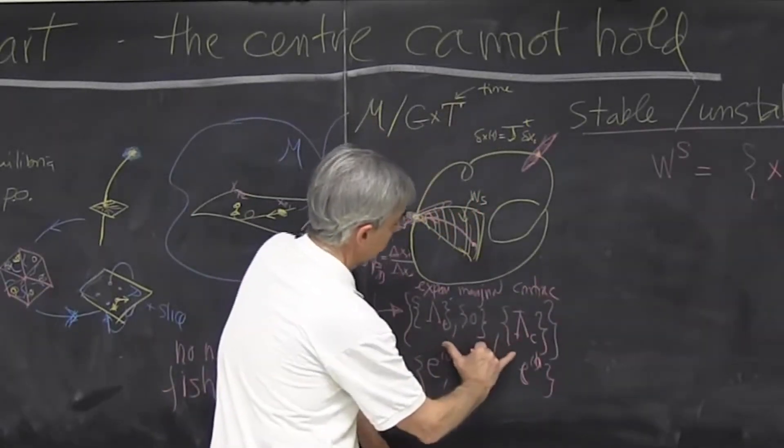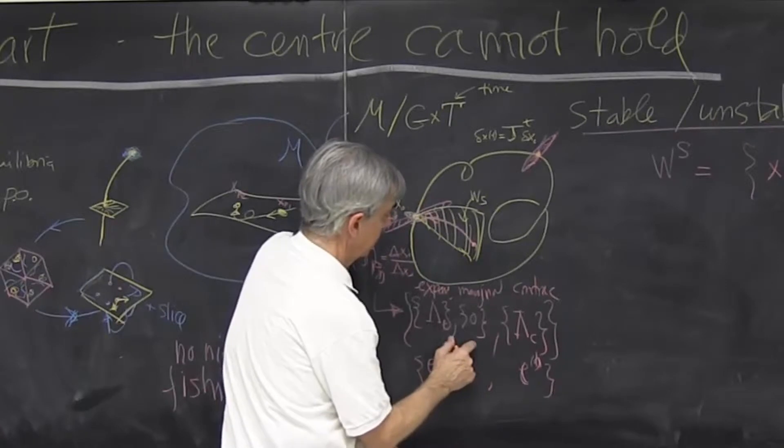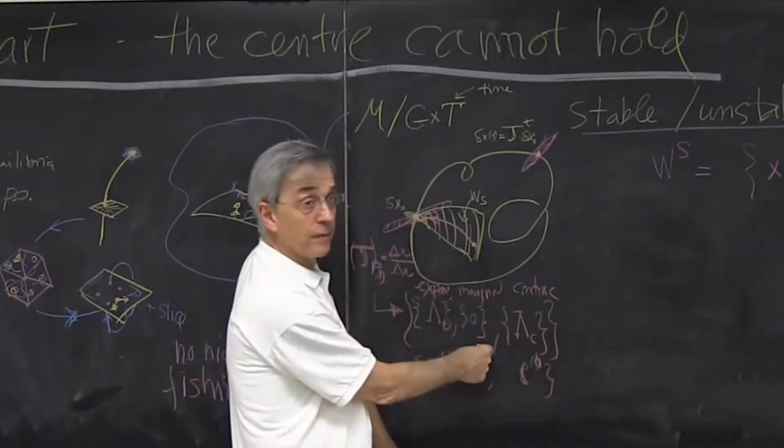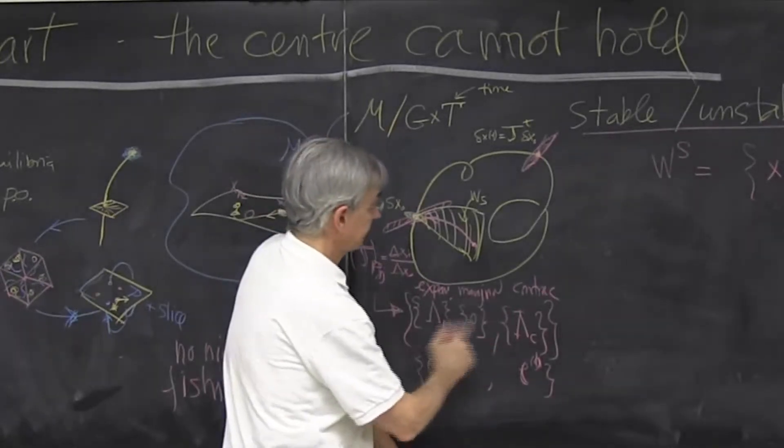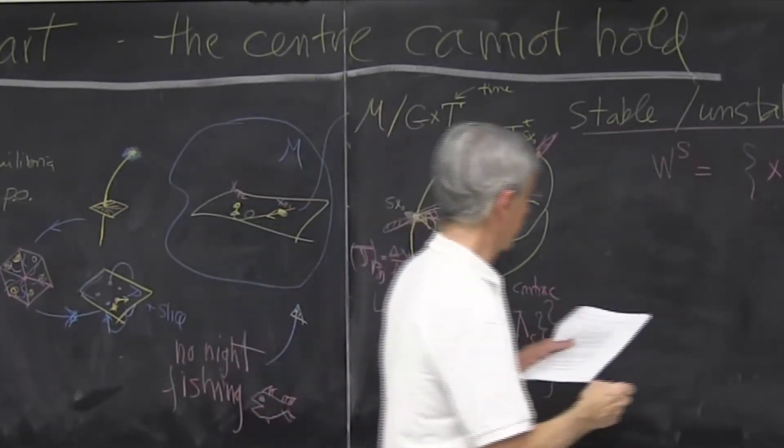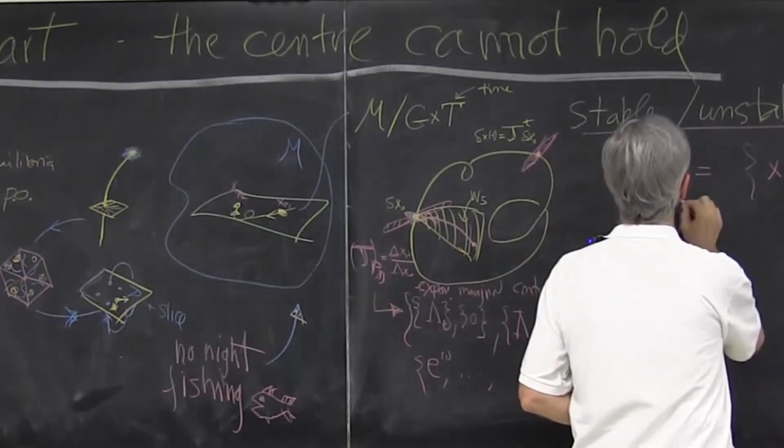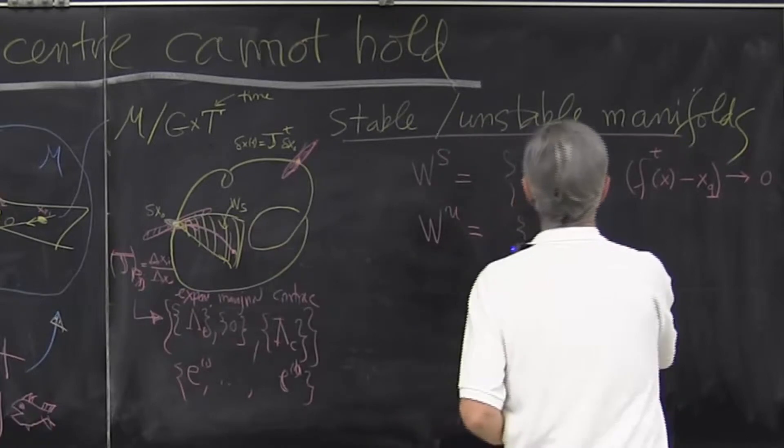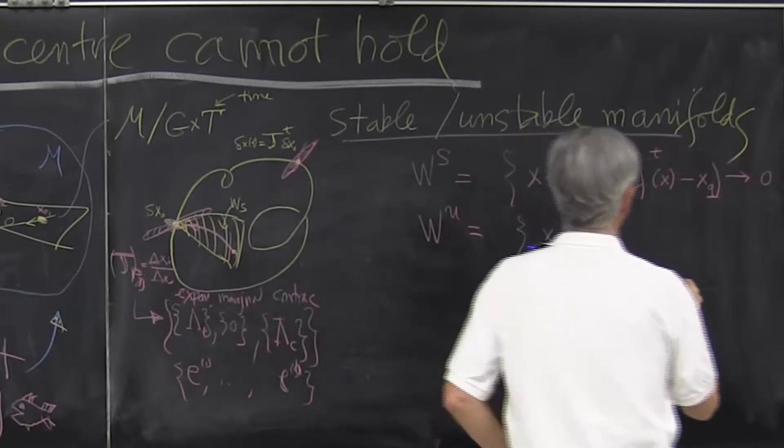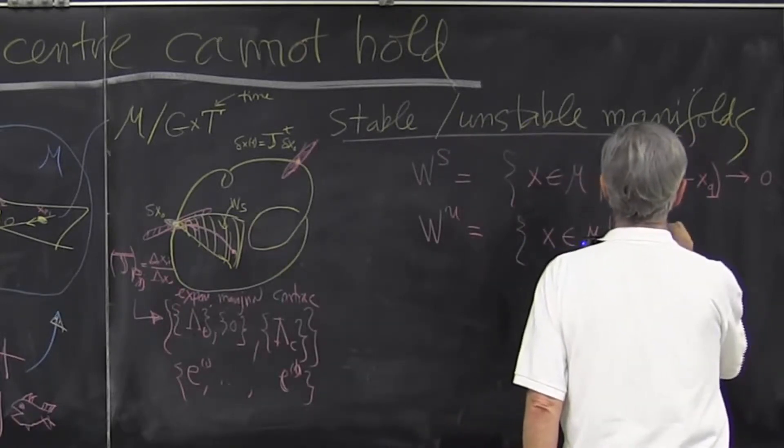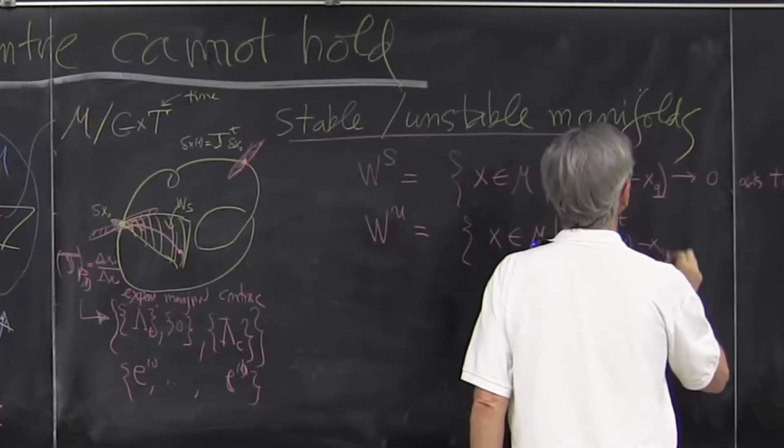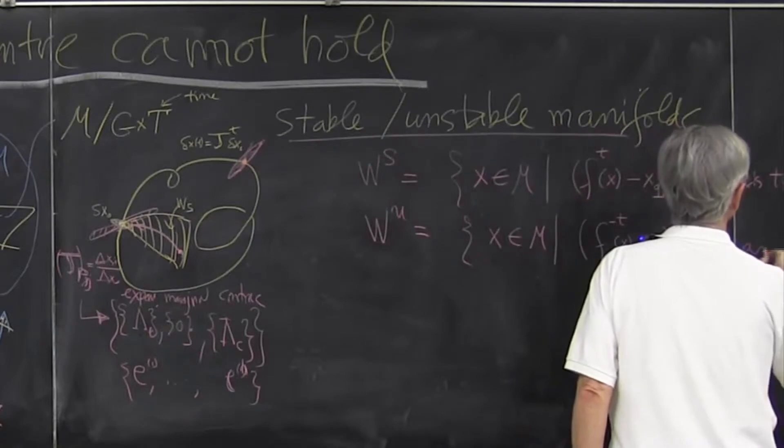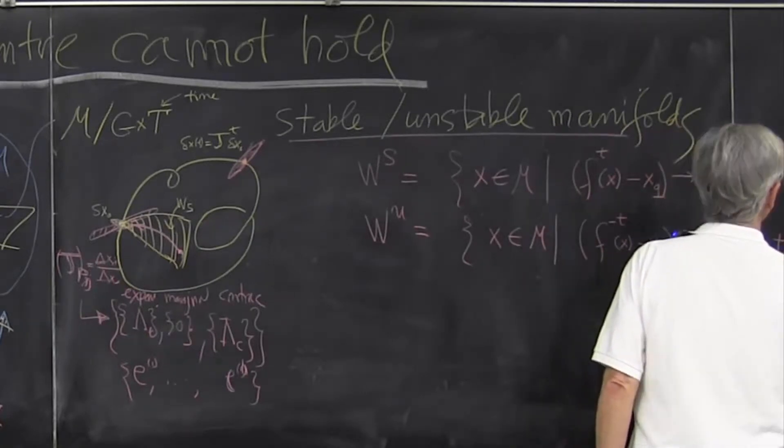But because by our construction, they are either expanding or contracting eigenvalues and no marginal eigenvalues, that is another manifold, which is called the unstable manifold. It's a set of all points, which if you look at the past, so we look where it came from, that goes to zero as t goes to minus infinity.